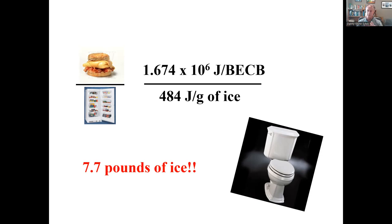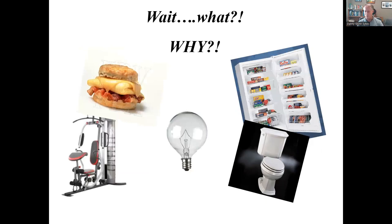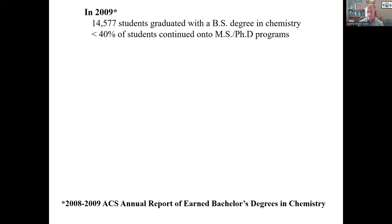I can only do so much — the students have to meet me more than halfway and be engaged and try to be engaged. They need a way to make these equations and numbers meaningful, so they can come away with important information they will use in future courses and in their careers. There are a lot of students who graduate each year with a degree in chemistry — based on 2009 data, about 14,000 students graduate annually, and about 40% continue on into MS and PhD programs, while about 60% go into industry. A smaller fraction goes into professional schools like medical, nursing, or dental.